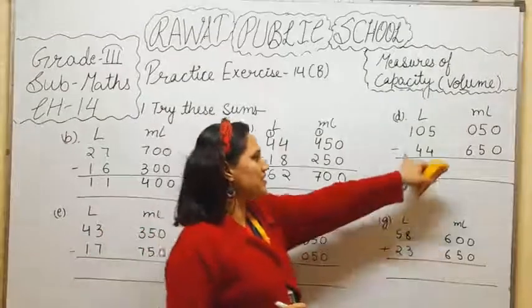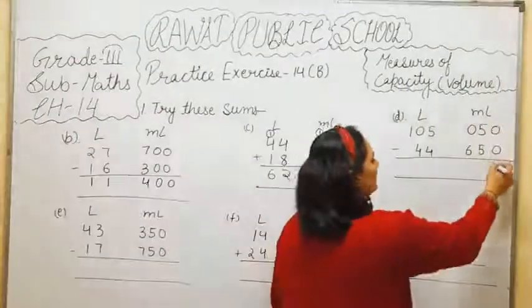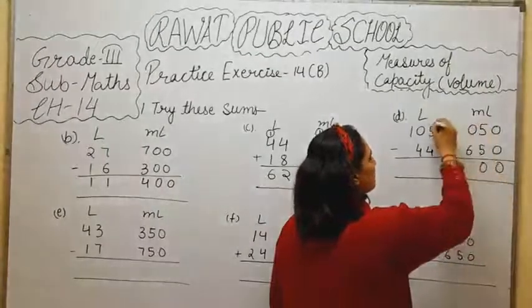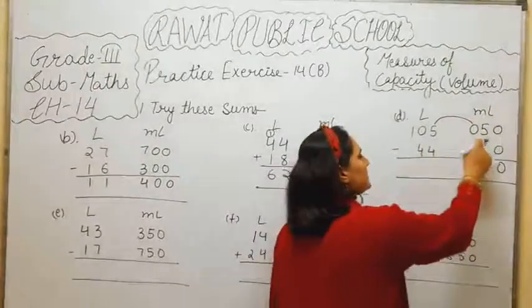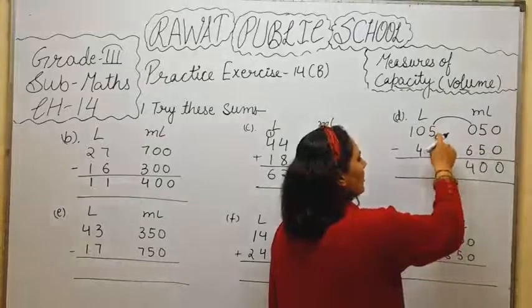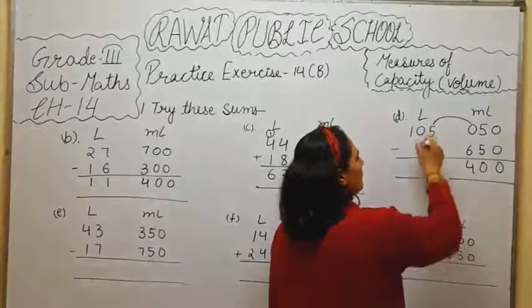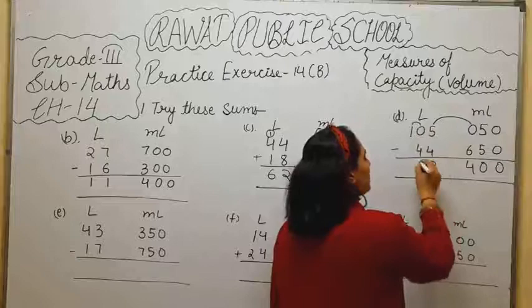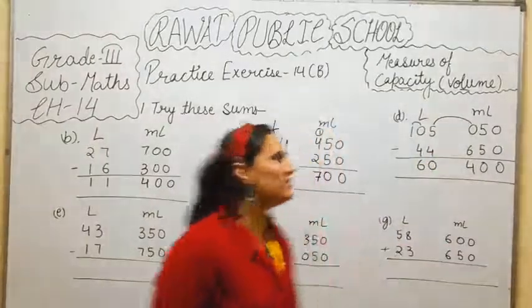Question number D is subtraction. 0 minus 0, 0. 5 minus 5, 0. We can't subtract 6 out of 0, so we will give carry to this number. 10 minus 6 is 4. Again, there is 4 minus 4, 0. We can't subtract 4 out of 0. We will give carry to this number. 10 minus 4, 6 is left. So, 60 liter and 400 ml.